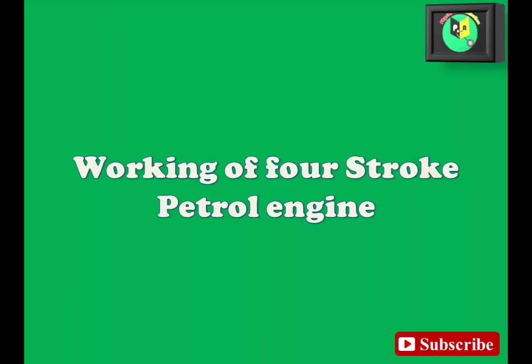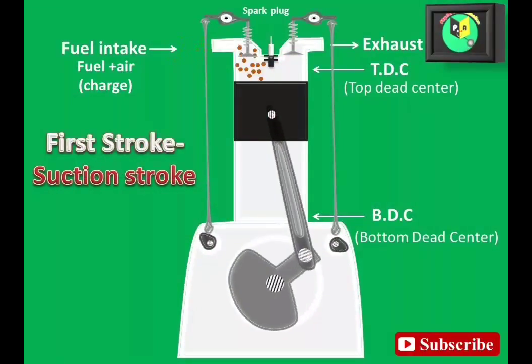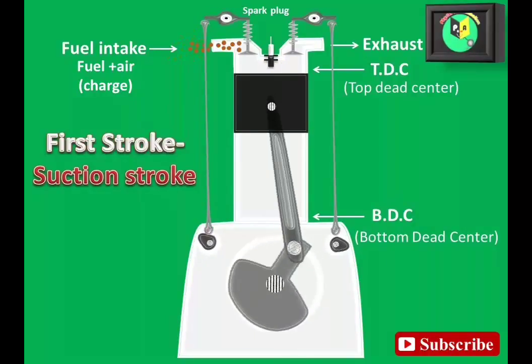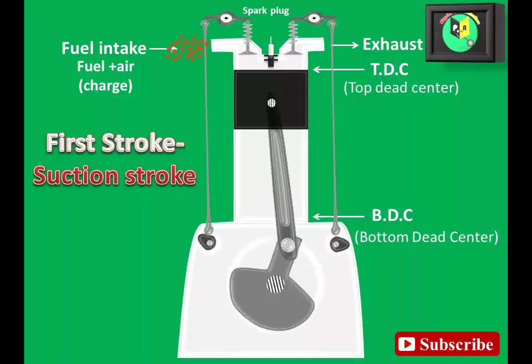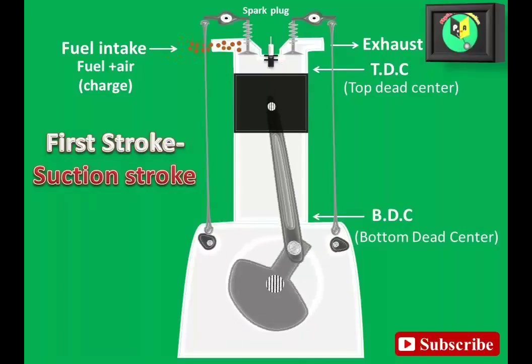Working of four-stroke petrol engine. First stroke: suction stroke. The piston is at the topmost TDC and it is ready to move down, drawing its mixture of fuel and air. The inlet valve is open and exhaust valve is closed. As the piston moves downwards, the fresh charge of fuel-air mixture enters the cylinder through the inlet valve due to the suction created.